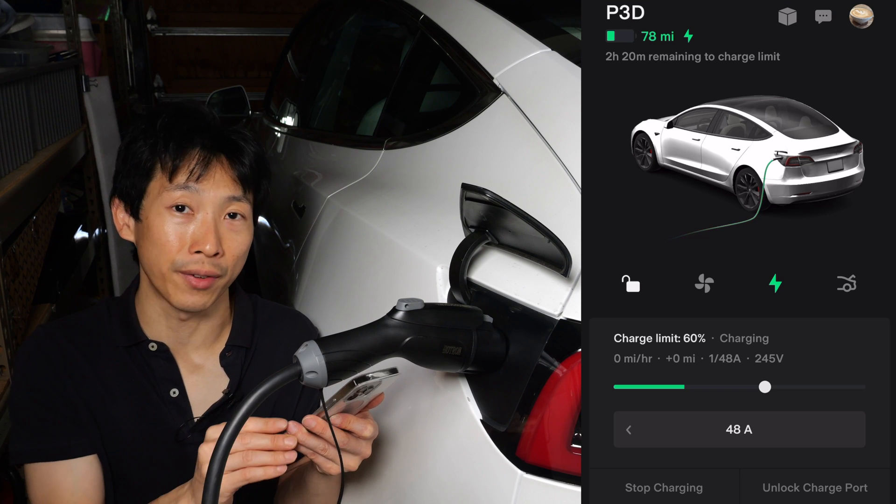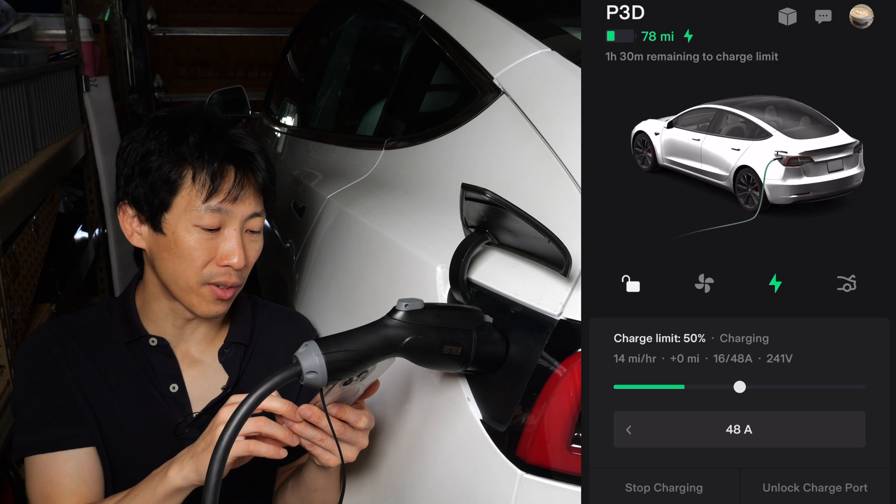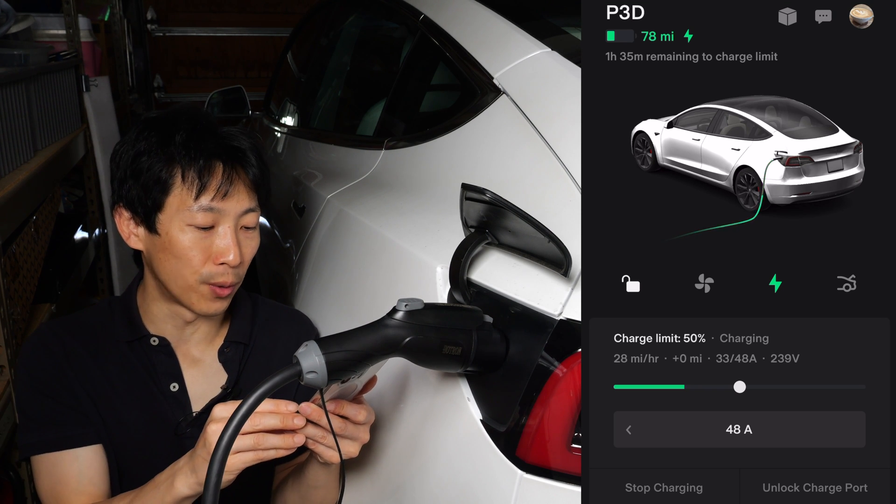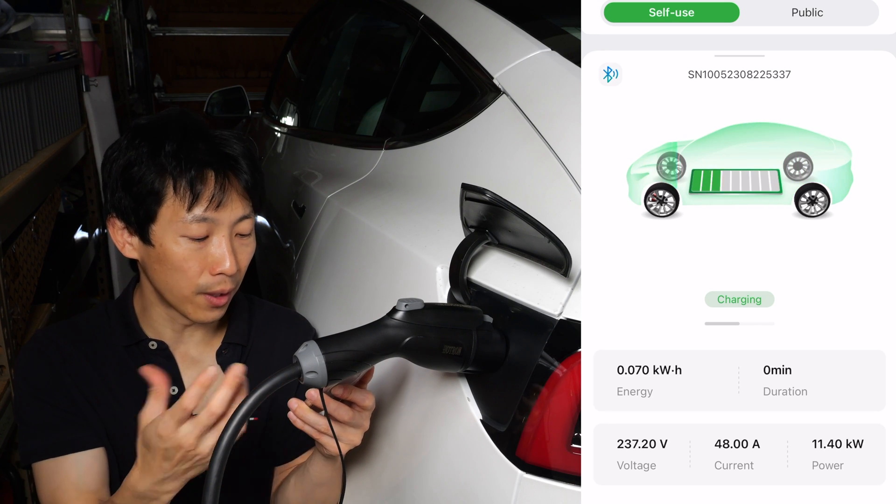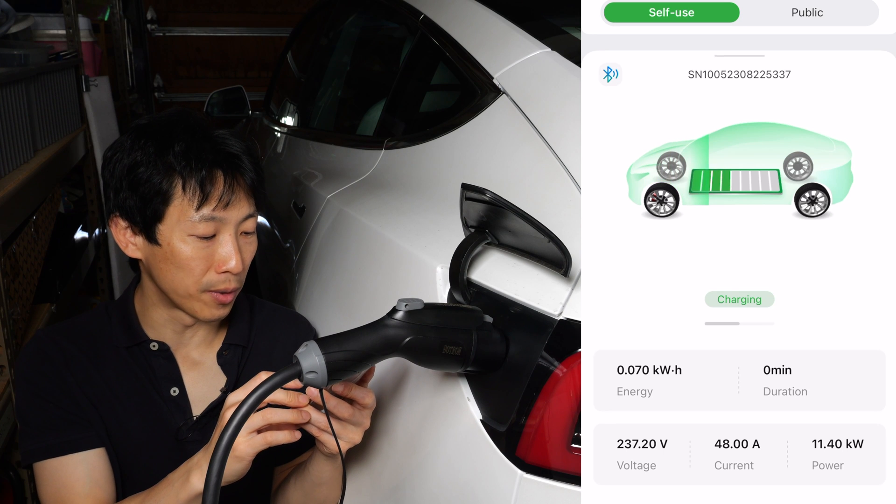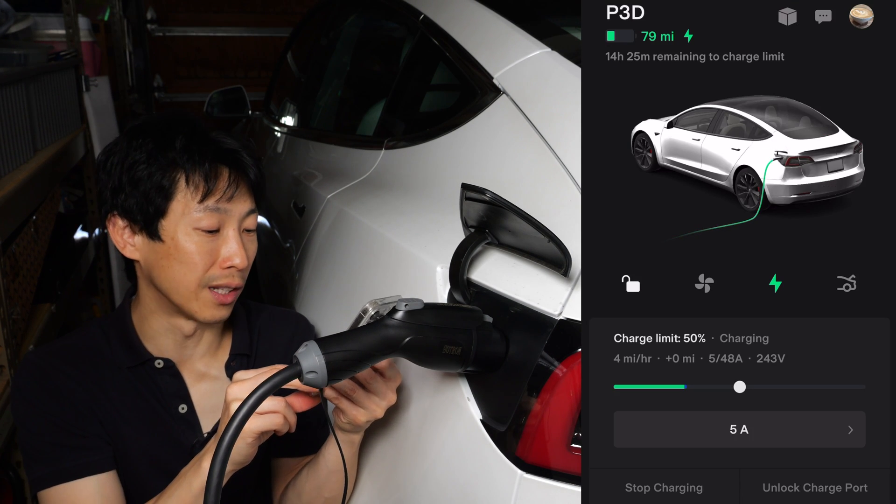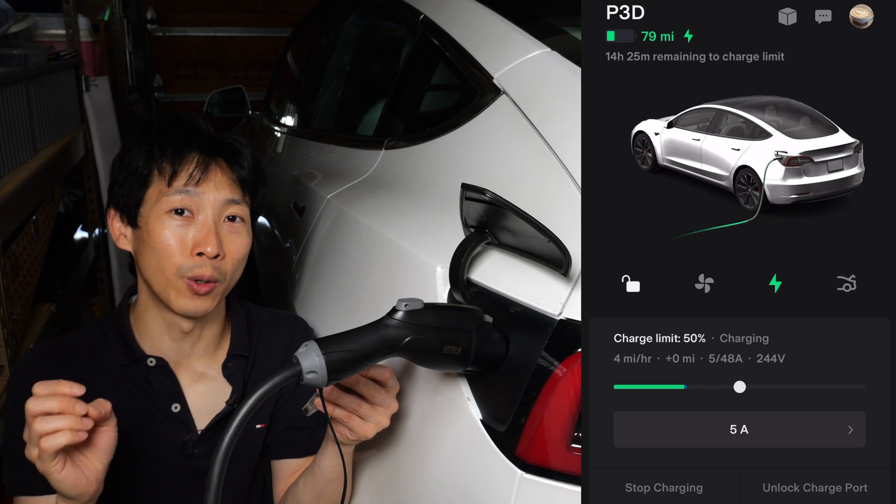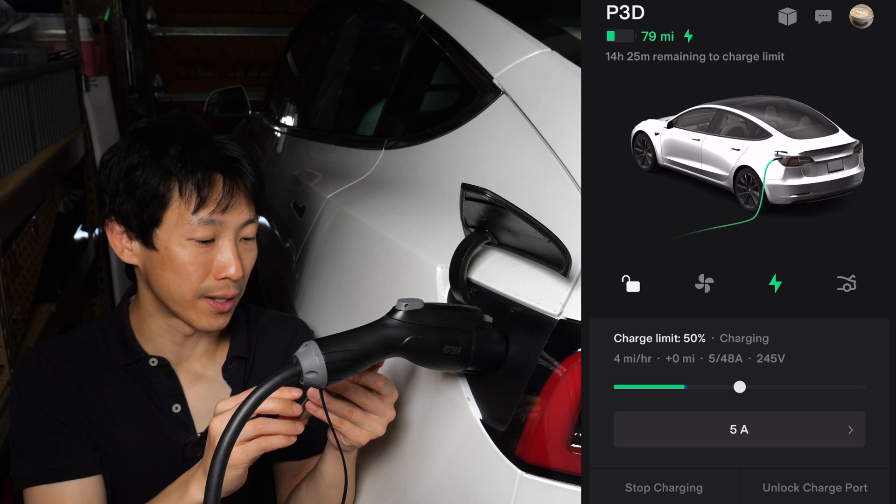Interestingly, it's not letting me charge at 50 amps, 48 amps maximum, but at least it's eight amps faster than 40 amps. Let's let it ramp up to 48 amps. Let's look at the EV Chargo app. It also says 48 amps, even though I've said that it should go up to 50 amps. Five amps is the lowest. Sometimes you want to trickle charge it a little bit. This might be the case if you have a little bit extra solar power and you want to not put it back into the grid and you just want to put it in your car instead.